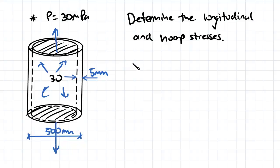Hopefully from the last video what you'll remember is that the formula for hoop stress is pressure times diameter divided by 2 times the thickness.